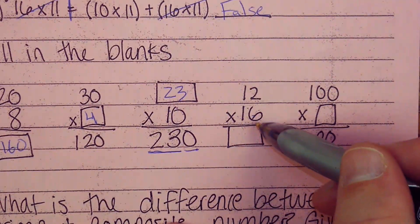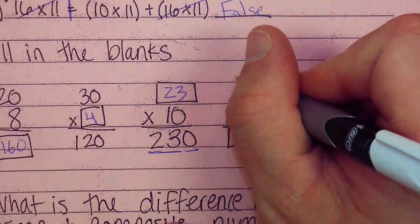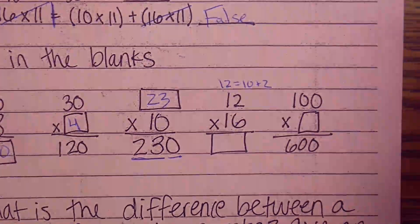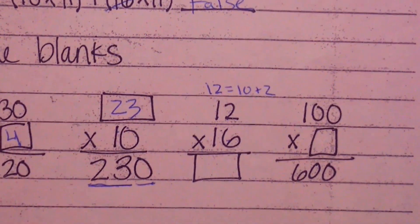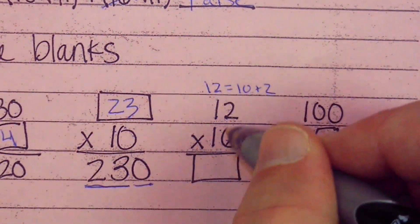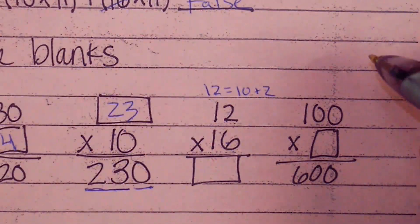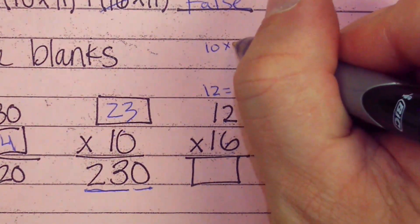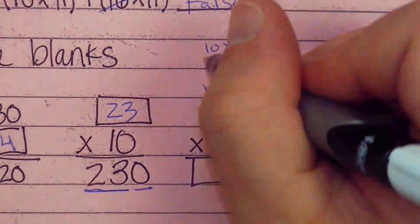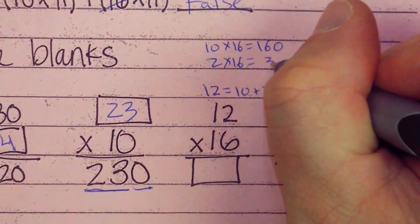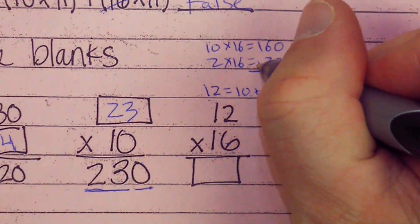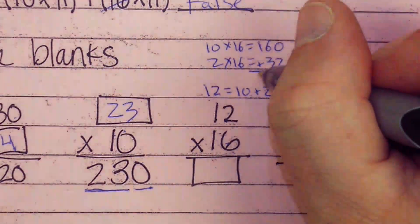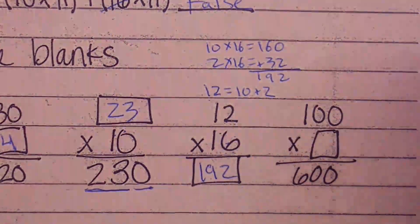12 times 16, this one can be a doozy. What is 12? Well, 12 is made up of 10 and 2, right? So what can I do? I take 10 times 16 and 2 times 16 and combine them. Let's do that. 10 times 16 is 160. 2 times 16 is 32. Let's add both of those together. Put a little plus sign right there. 0 plus 2, 6 plus 3, 1 plus nothing. My answer is 192.